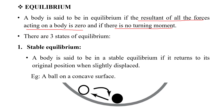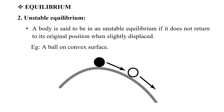Equilibrium exists in three states. The first state is stable equilibrium. A body is said to be in stable equilibrium if it returns to its original position when slightly displaced. For example, a ball on a concave surface.